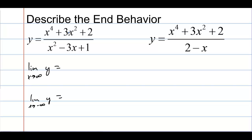When looking at end behavior, it's really large values of x — billions, trillions, gazillions, the biggest number you can possibly think of. But let's consider a trillion: adding two won't really affect how this ends, and adding one to a trillion won't affect how it ends either. Even taking three times a trillion doesn't hardly touch the value you'd get if you squared a trillion. So the x squared really matters here on the bottom.